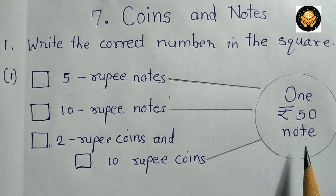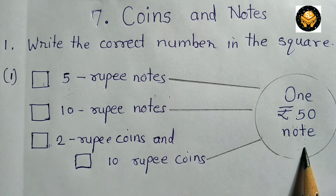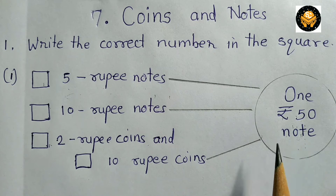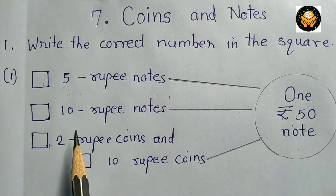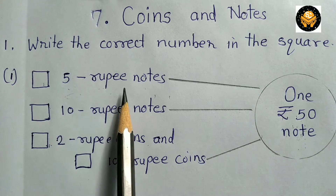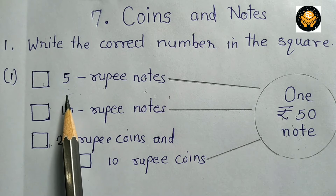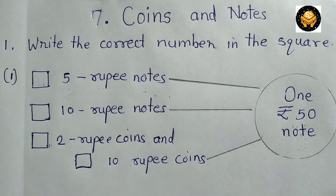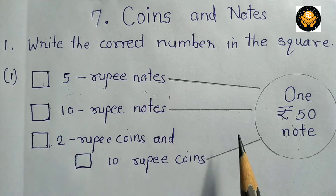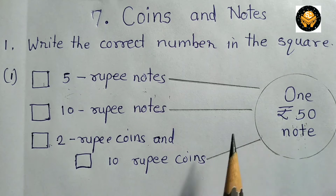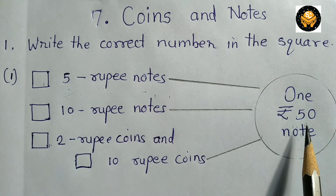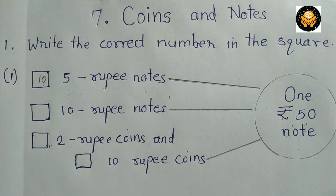A 50 rupee note is given to you and it is asked to find the change in the form of 5 rupee notes. We are familiar with multiplication tables, so using the table of 5: 5 tens are 50. So 10 five-rupee notes are equal to 50 rupees.